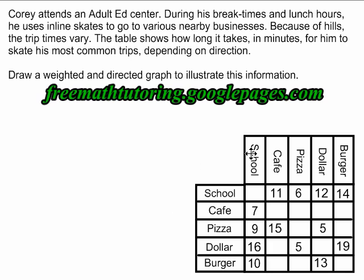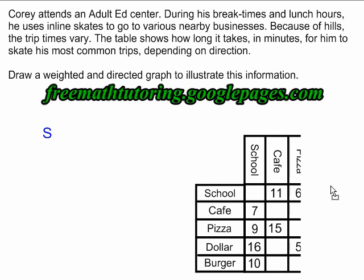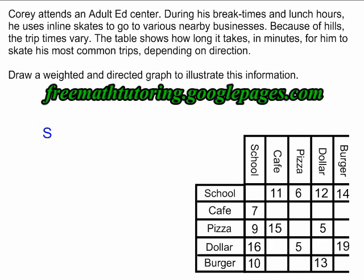The first thing you have to do is examine the situation and realize that you have five locations that are important here. Those five locations have to show as vertices on your graph. I'm starting with the school — I'm putting a vertex named S. Then I need vertices for the cafe, the pizza place, the dollar store, and the burger place.